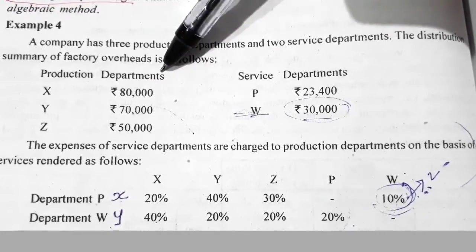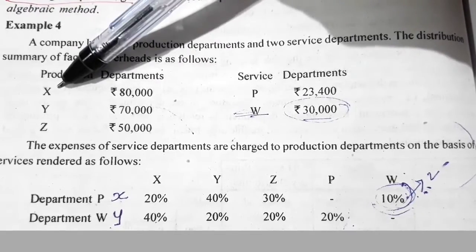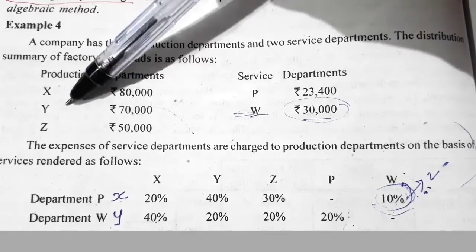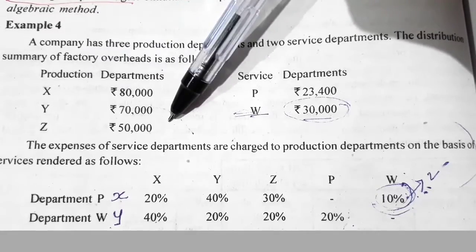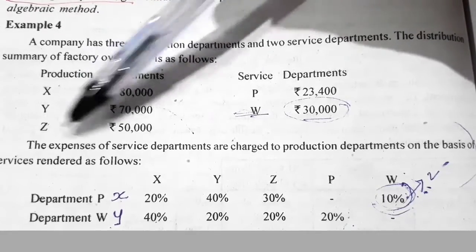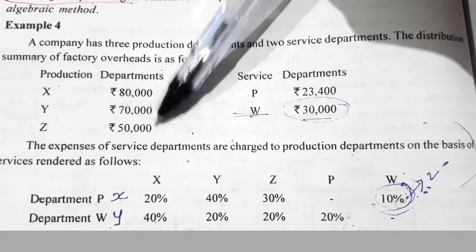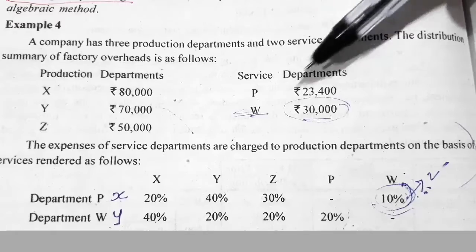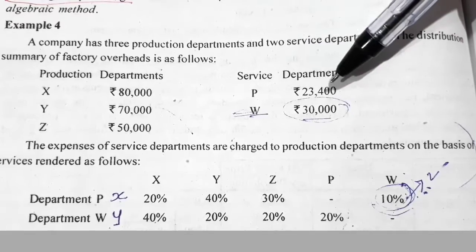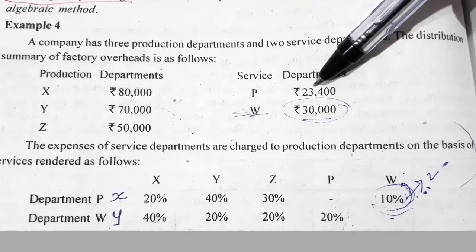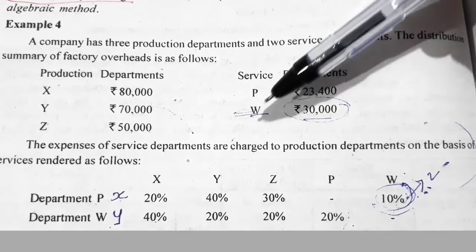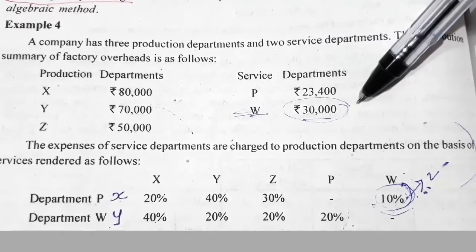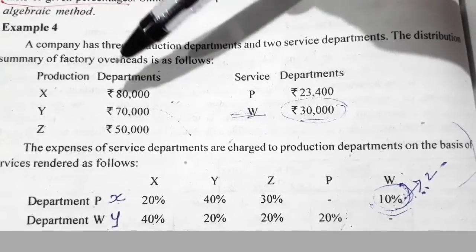Production department X: Rs. 80,000; Y: Rs. 70,000; Z: Rs. 50,000. Service departments: P — Rs. 23,400; W — Rs. 30,000.